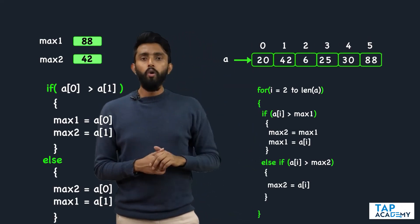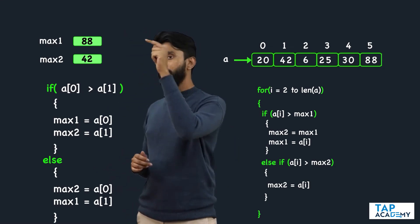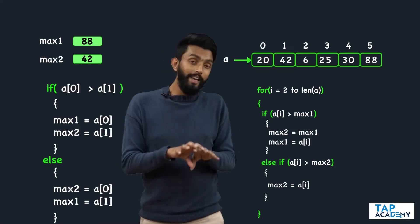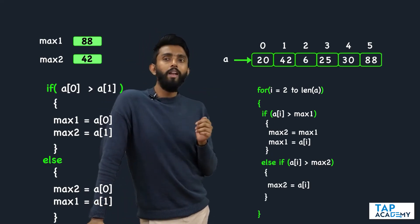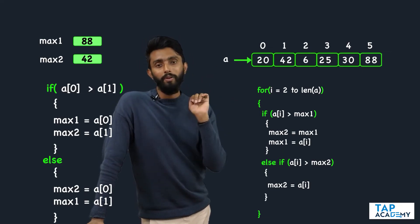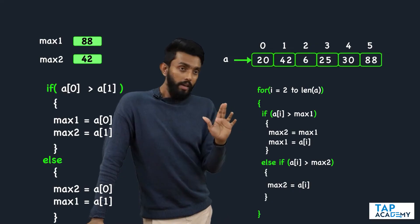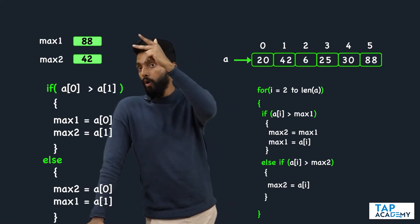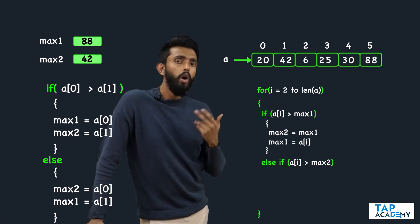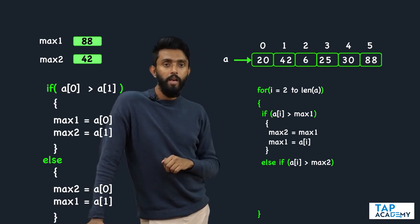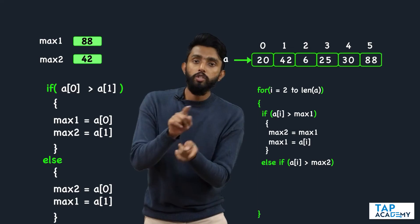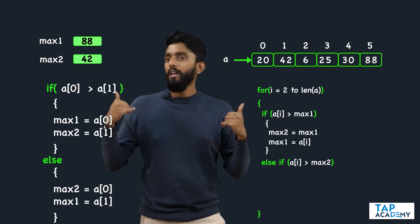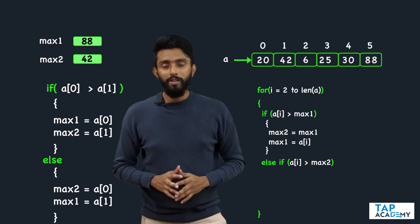After the loop is done, max1 has the largest and max2 has the second largest. Since the question asks for the second largest, return max2 — which in this case is 42. If the question was to find the second smallest element, all you have to do is change the signs: instead of checking for greater, check for smaller. Let's go write some code and see whether this works as per our expectation.